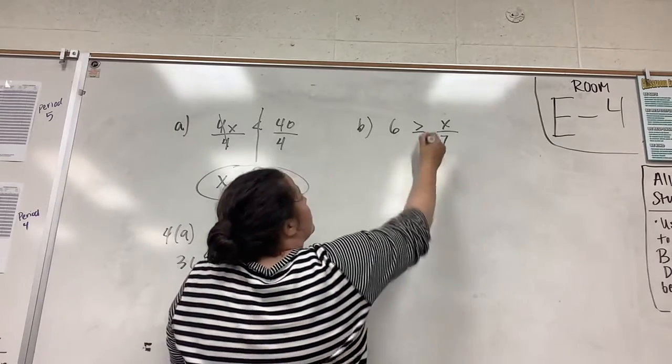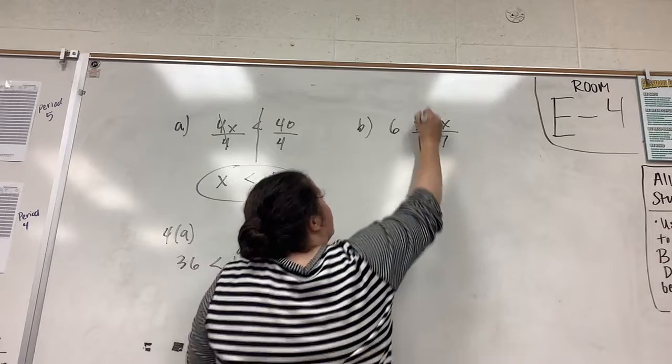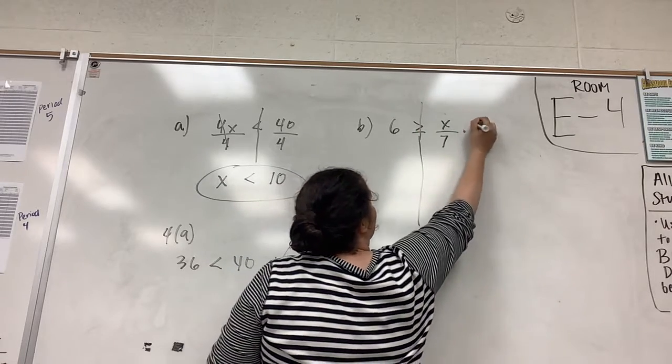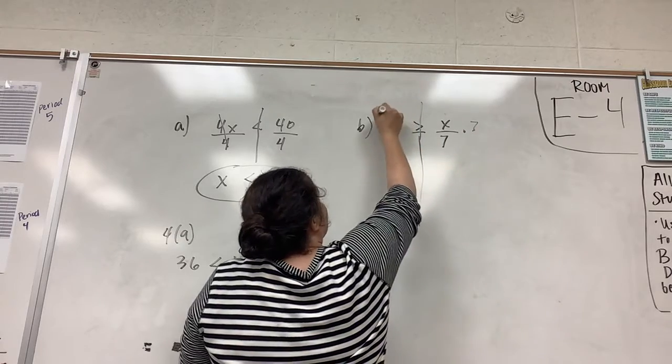On this one we're going to draw a line down the middle again. So we want to get x by itself. x is divided by 7, so we're going to multiply both sides by 7.